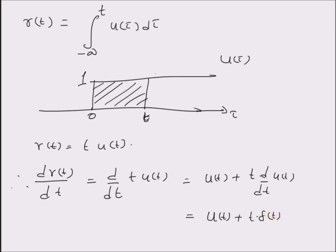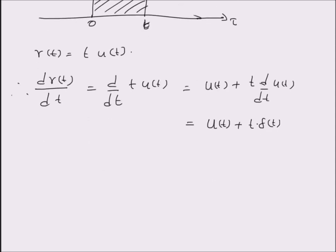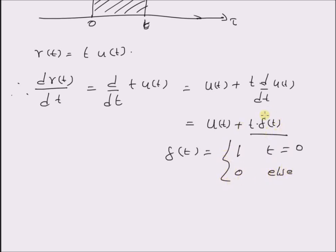And since delta of t is equal to 1 only for t equal to 0, this component is 0. Since delta of t is equal to 1 for t equal to 0 and 0 elsewhere, this product t times delta of t is clearly 0. Therefore, the derivative of the ramp signal R of t is equal to u of t.